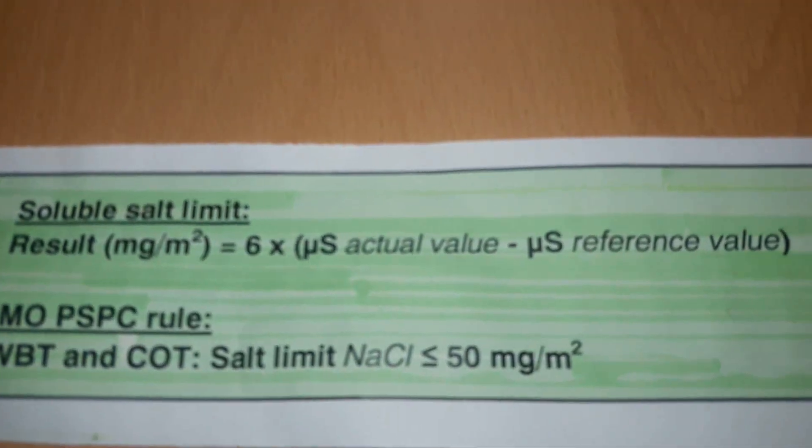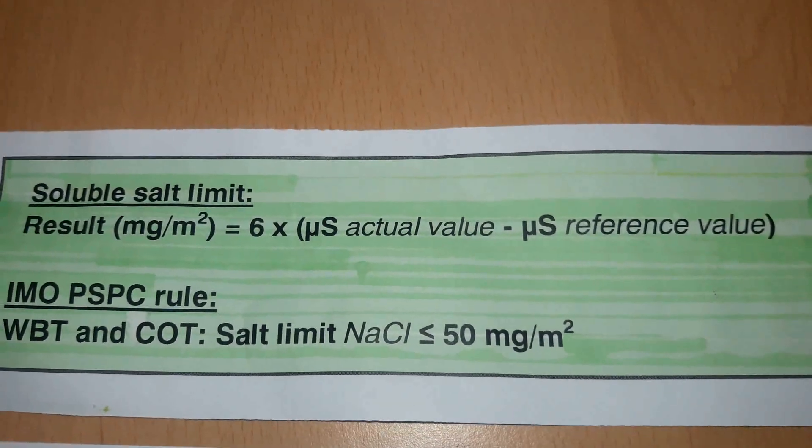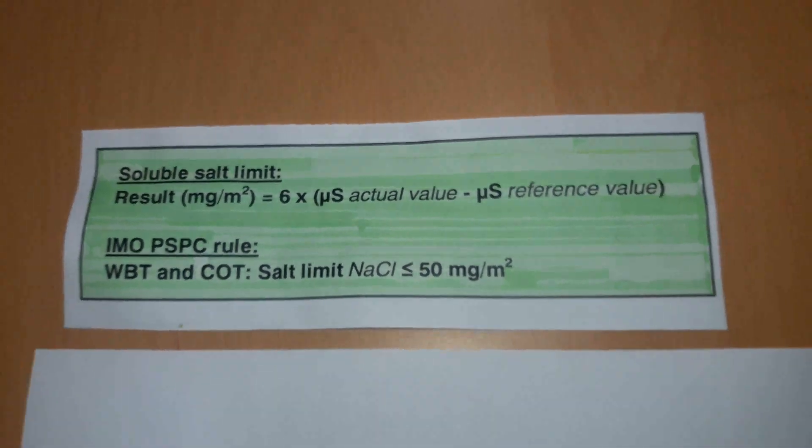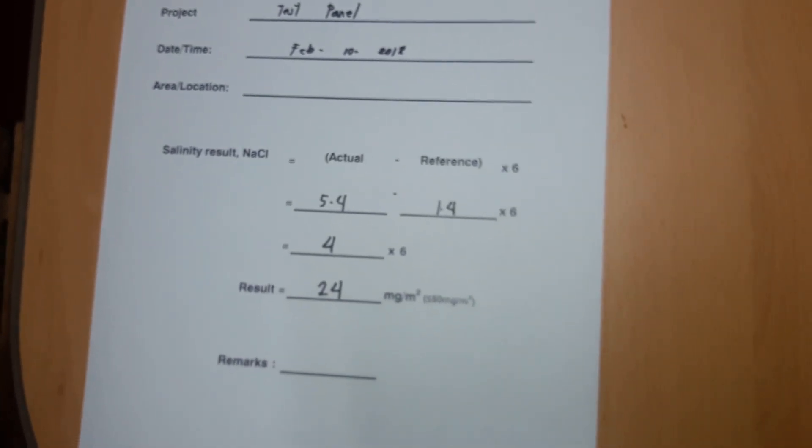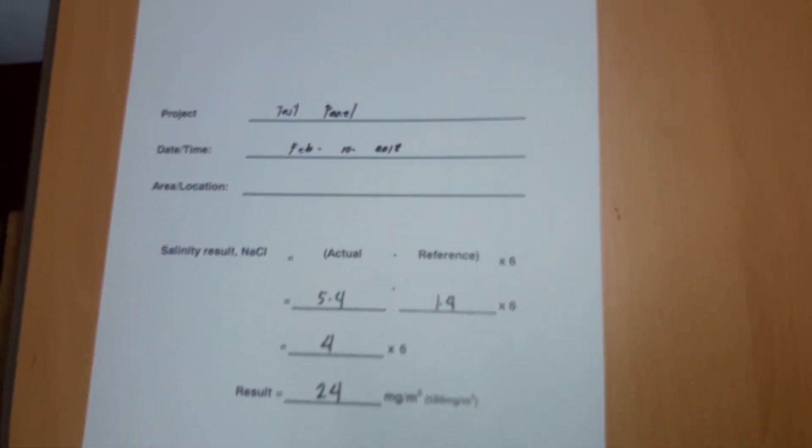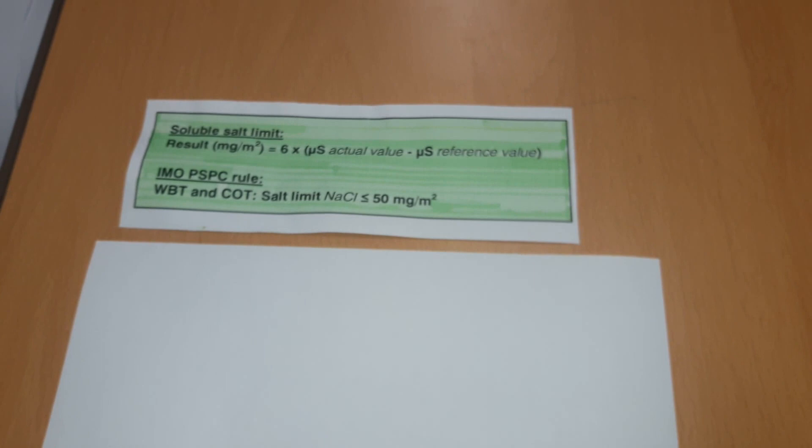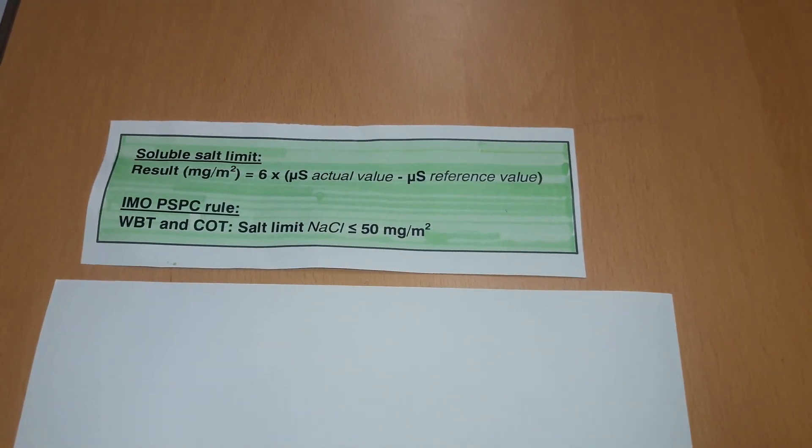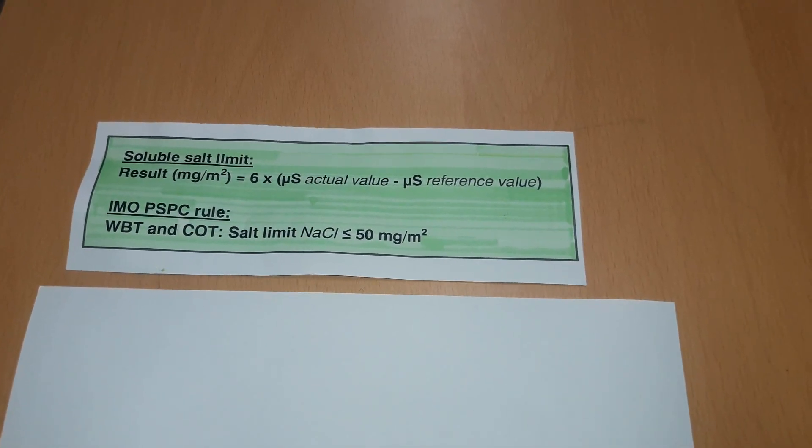Record and document the tested surface area. Indicate result if passed or failed as per PSPC rule. For water ballast tank and COT, water-soluble salt limit equivalent to less than or equal to 50 mg per meter squared of sodium chloride.